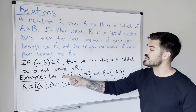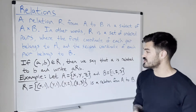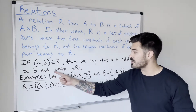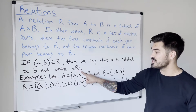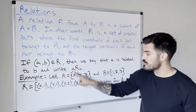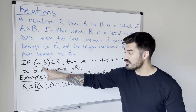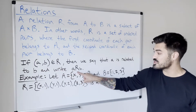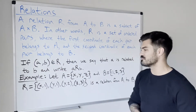So it could be the whole Cartesian product itself, or it could be a proper subset. If this ordered pair (A, B) is in the relation, then we say that A is related to B, and we write A is related to B using this notation. So these two things really mean the same thing — they are equivalent. If (A, B) is in the relation if and only if A is related to B. Two different ways of saying the same thing.